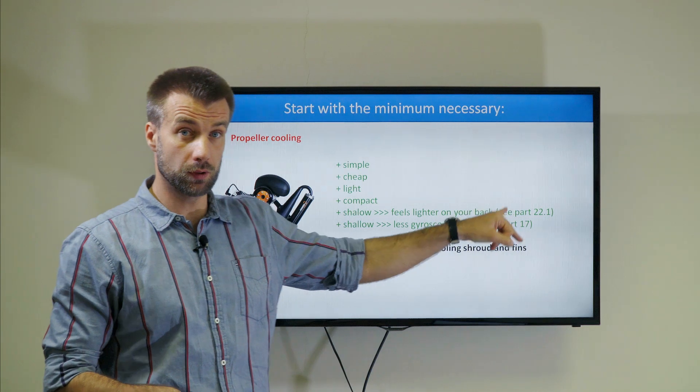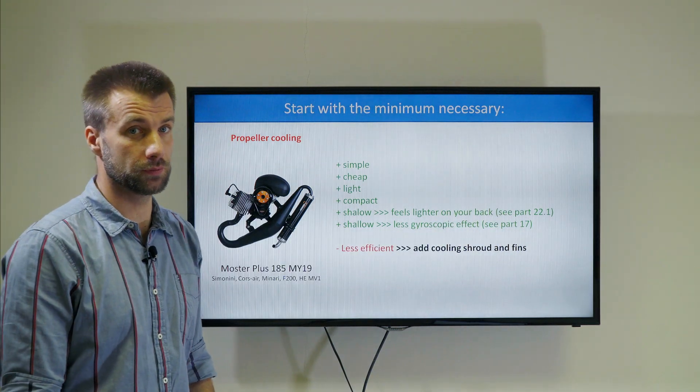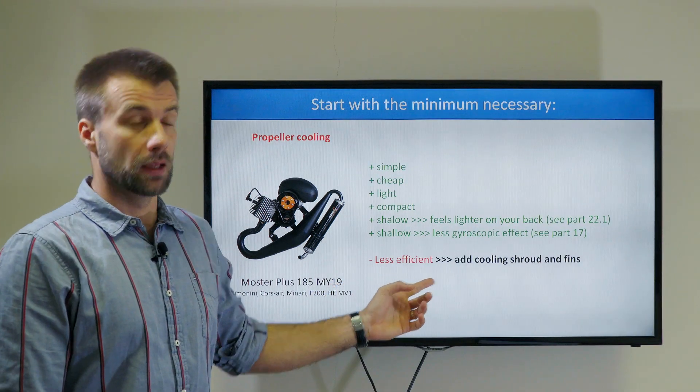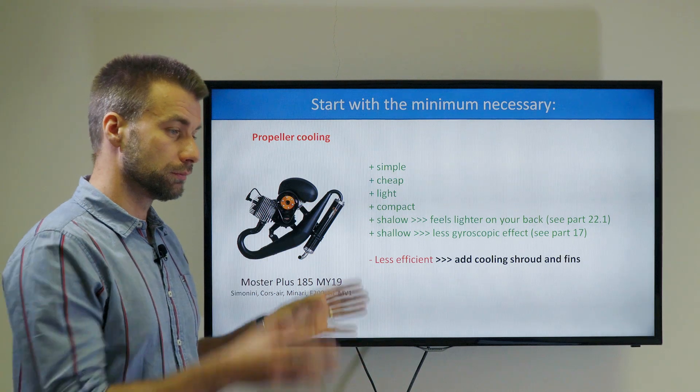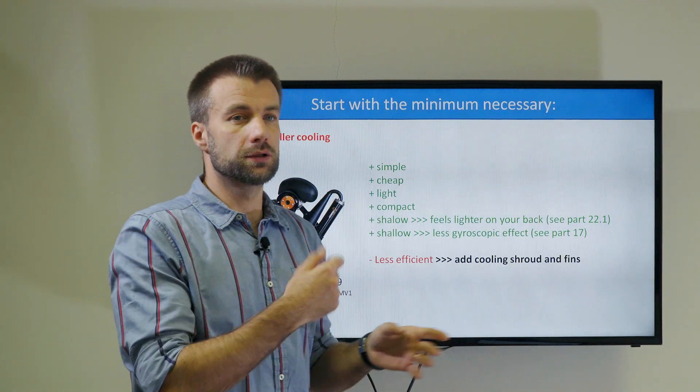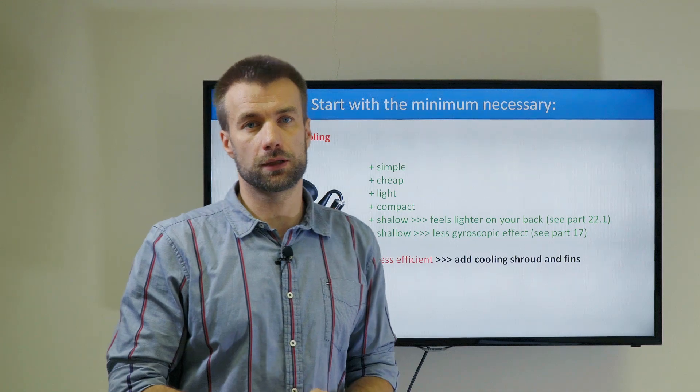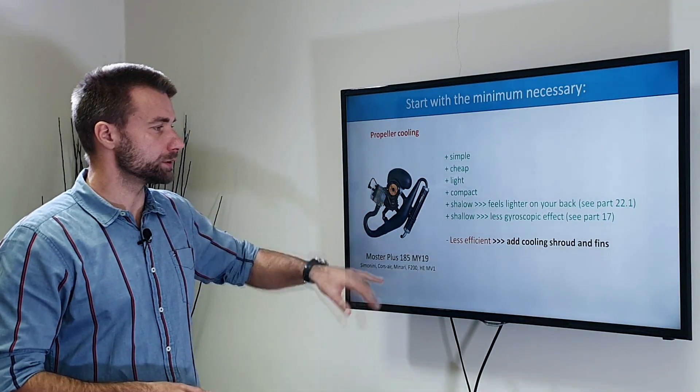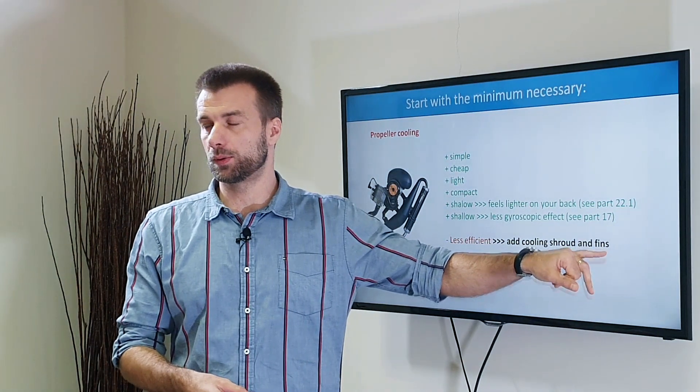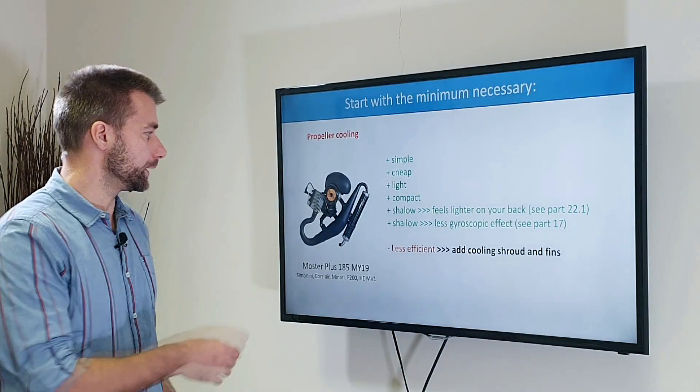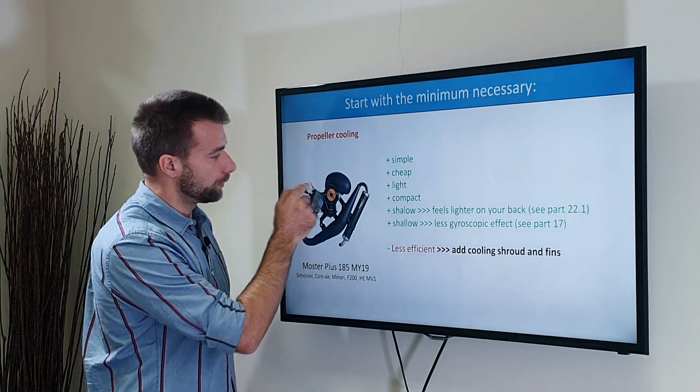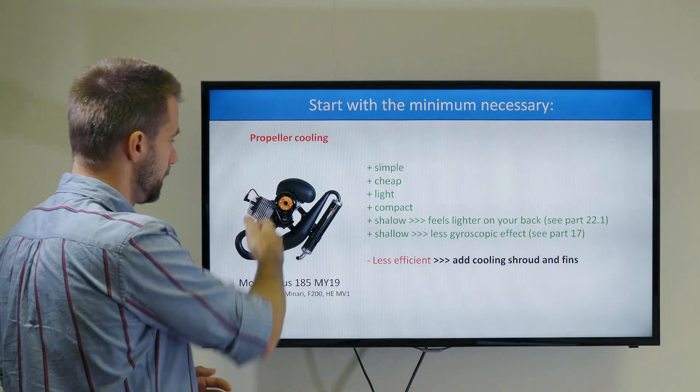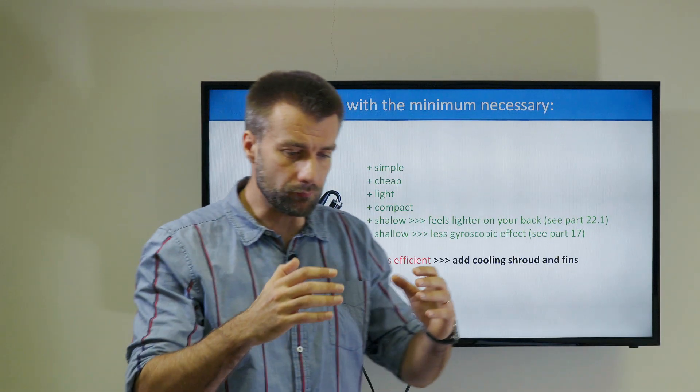Is it less efficient? Yes. So this is how we start to design an engine. Try the simplest thing, test it, and if it's not enough, then you need to make improvements. The major improvements mostly that we see with these engines is to add a cooling shroud and fins on the prop. What's a cooling shroud? It's a mostly carbon fiber shroud around the cylinder head and the top side of the cylinder.